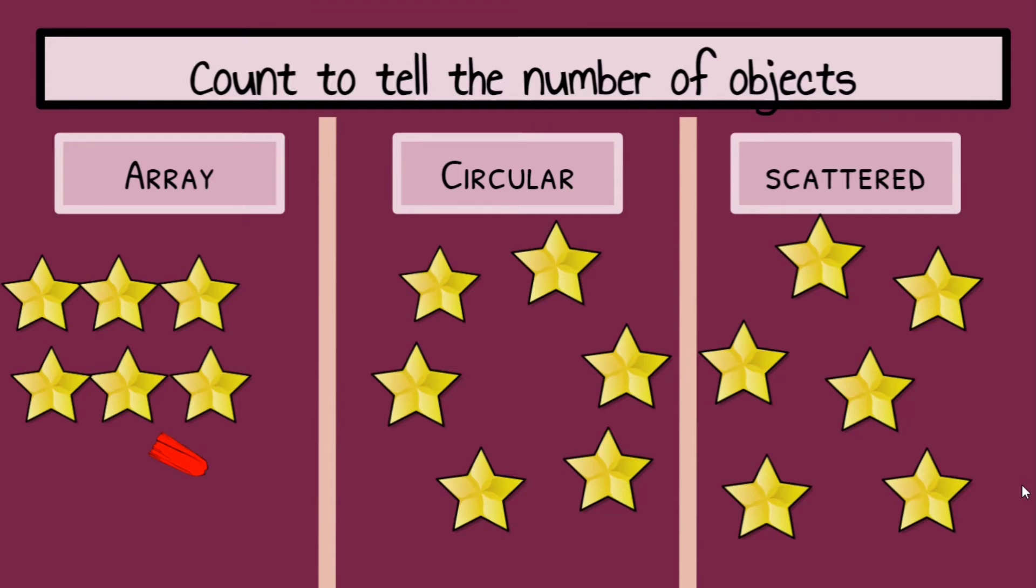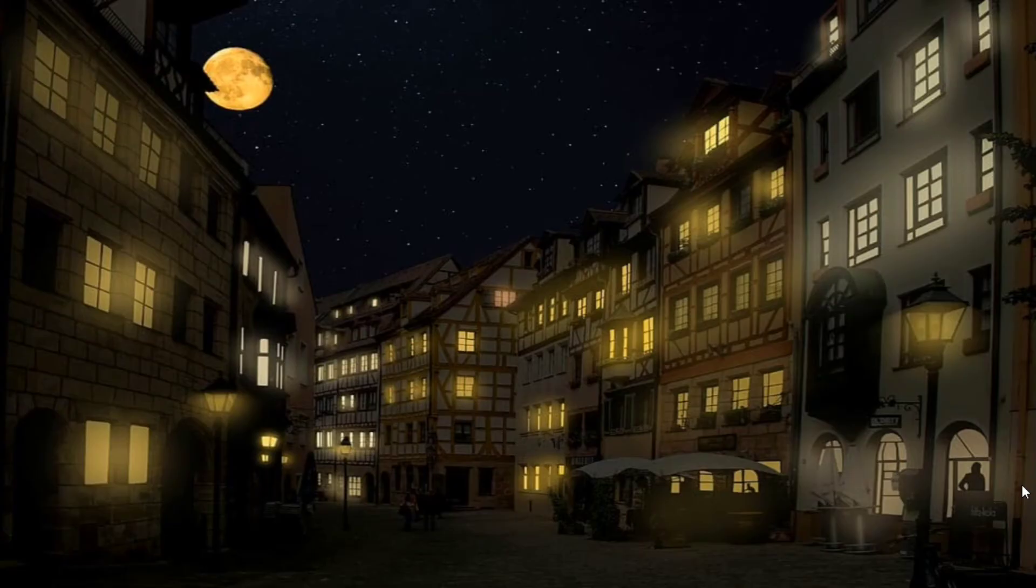Circular counting, we're teaching them how to use strategies to count correctly and not recount a star or an object that they already touched. And scattered, we teach them how to use a different strategy so that they can count correctly and not recount something more than once as well.